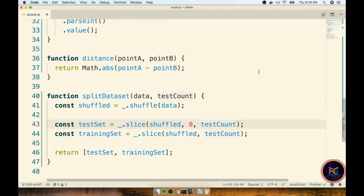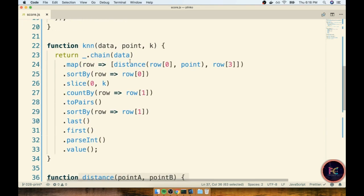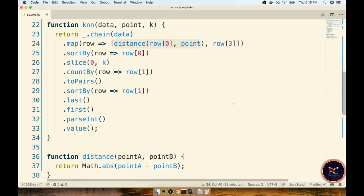So in other words, to change out our entire algorithm and make it work for multiple dimensions, all we really have to do is update our distance formula right here, and also make sure that when we pass in these data points to that distance formula, we consider all the different features that are relevant. So the drop position, the bounciness, and the ball size as well.